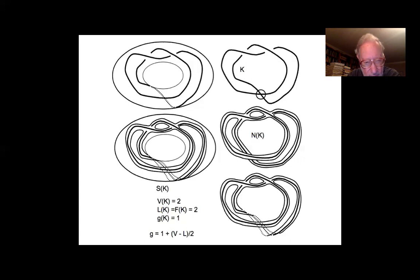Virtual knot theory becomes equivalent to a theory of knots in three-manifolds that are orientable surfaces cross the unit interval, stabilized. In other words, virtual knot theory is a step in the direction of doing a direct combinatorial formulation for knots in three-manifolds. In this talk we go in a somewhat different direction by taking the extra restriction of rotational.